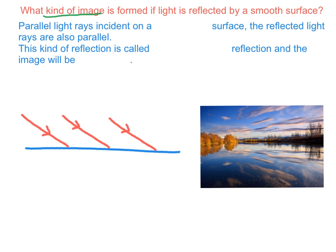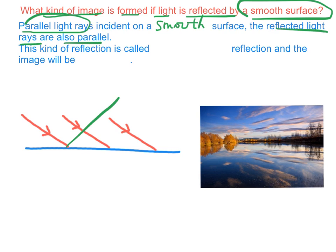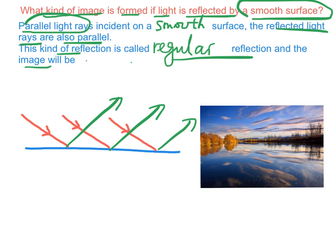What kind of image is formed if light is reflected by a smooth surface? When parallel light rays are incident on a smooth surface as shown, the reflected light are also parallel. This kind of reflection is called regular reflection. And the image formed by regular reflection will be sharp or clear.